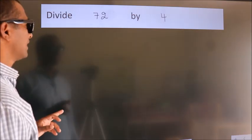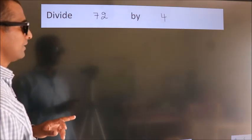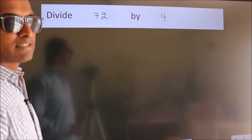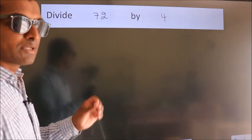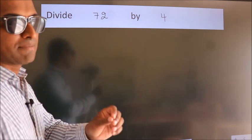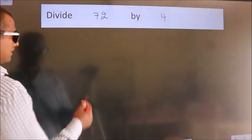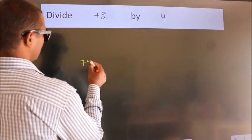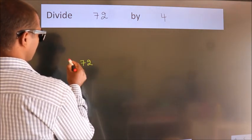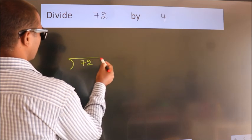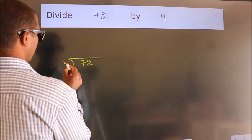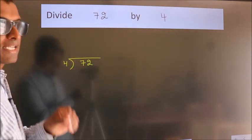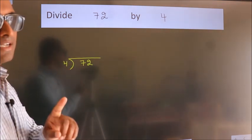Divide 72 by 4. To do this division, we should frame it in this way. 72 here, 4 here. This is your step 1.